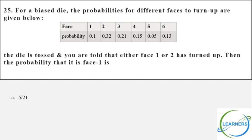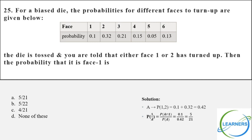This is based on a biased die — it is not equally likely. Like an axiomatic approach, they have given the probability of each outcome. When you throw the die, outcomes are 1 through 6. The die is biased: P(1)=0.1, P(2)=0.32, P(3)=0.21, P(4)=0.15, P(5)=0.05, P(6)=0.13. The sum of all six must be 1.